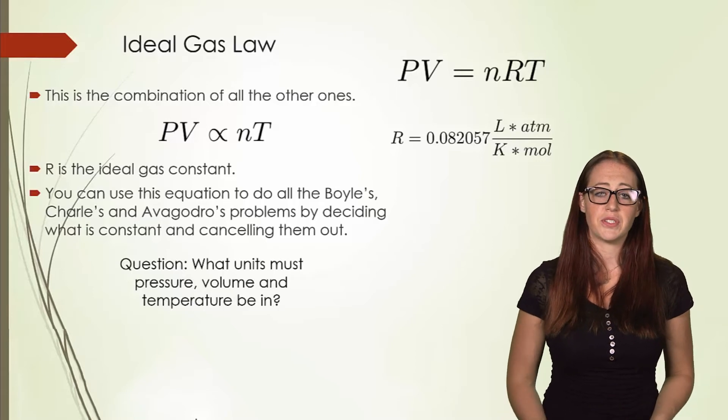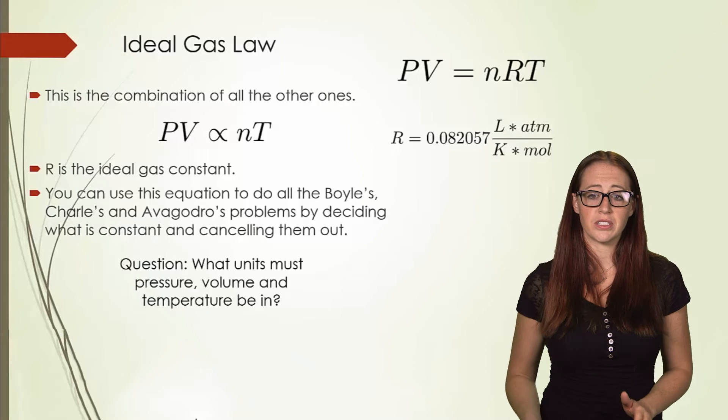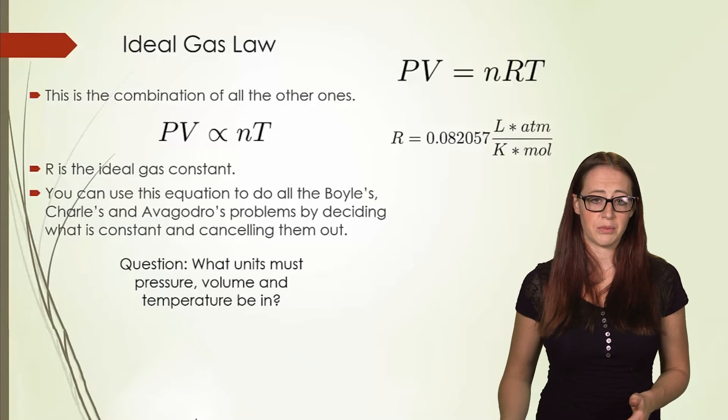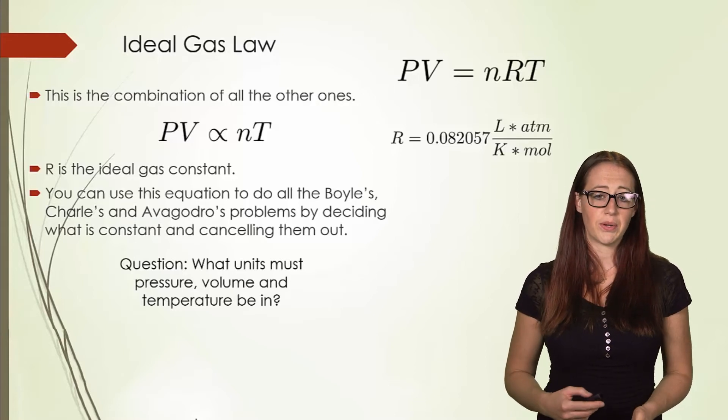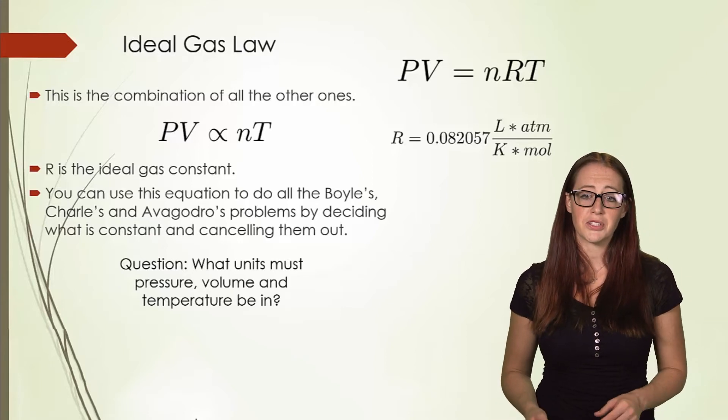Because this is a ratio of quantity with units, R is going to have the units of those variables. As chemists, we tend to report R in terms of liters, atmospheres, Kelvins, and moles. This is the 0.08206 number that so many of you may even have stuck in your memory from using it so much in high school.